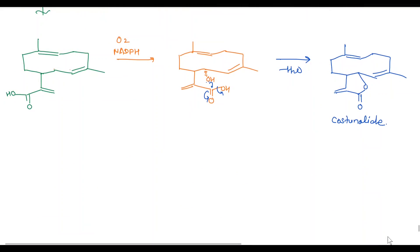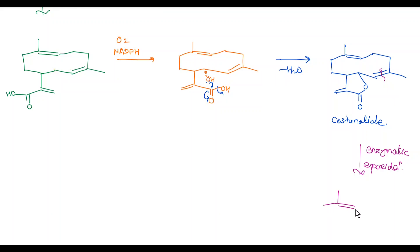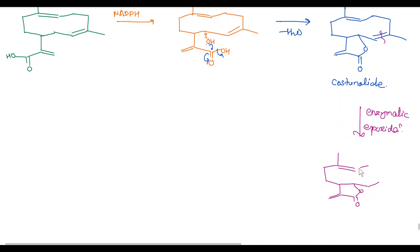In the next step, successive enzymatic epoxidation of this double bond takes place, and we get an oxygen-carbon bond, oxygen, and here an ethylene oxide moiety. This product is known as parthenolide.